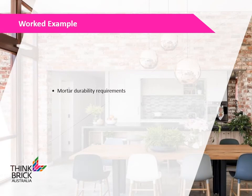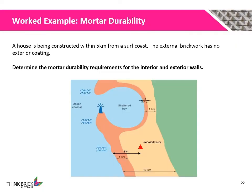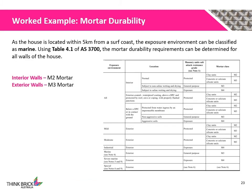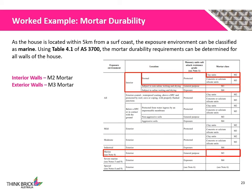We will now go through a worked example on how to determine the durability class of mortar for a building. A house is being constructed within 5 km from a surf coast. The external brickwork has no exterior coating. We need to determine the mortar durability requirements for the interior and exterior walls. As the house is located within 5 km from a surf coast, the exposure environment can be classified as marine. Using Table 4.1 of AS3700, interior walls shall use M2 mortar, while exterior walls shall use M3 mortar.